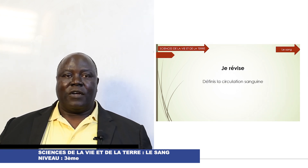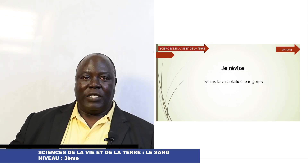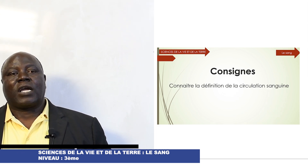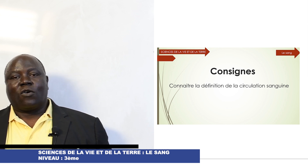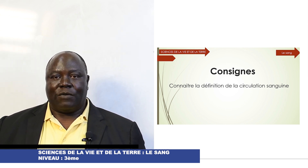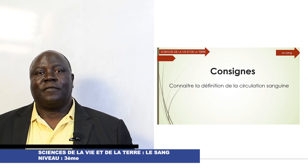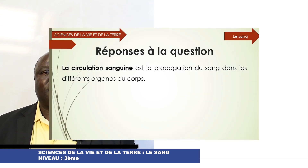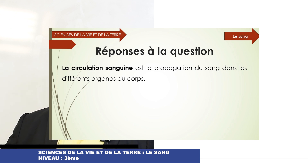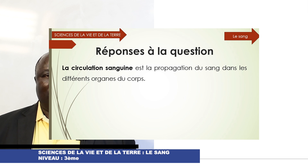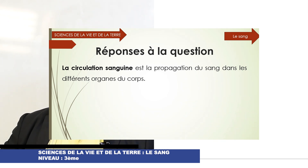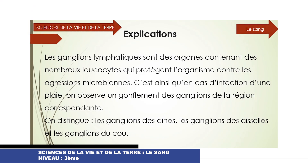Nous révisons. Définir la circulation sanguine. Consigne : connaître la définition de la circulation sanguine. Réponse à la question : la circulation sanguine est la propagation du sang dans les différents organes du corps humain.